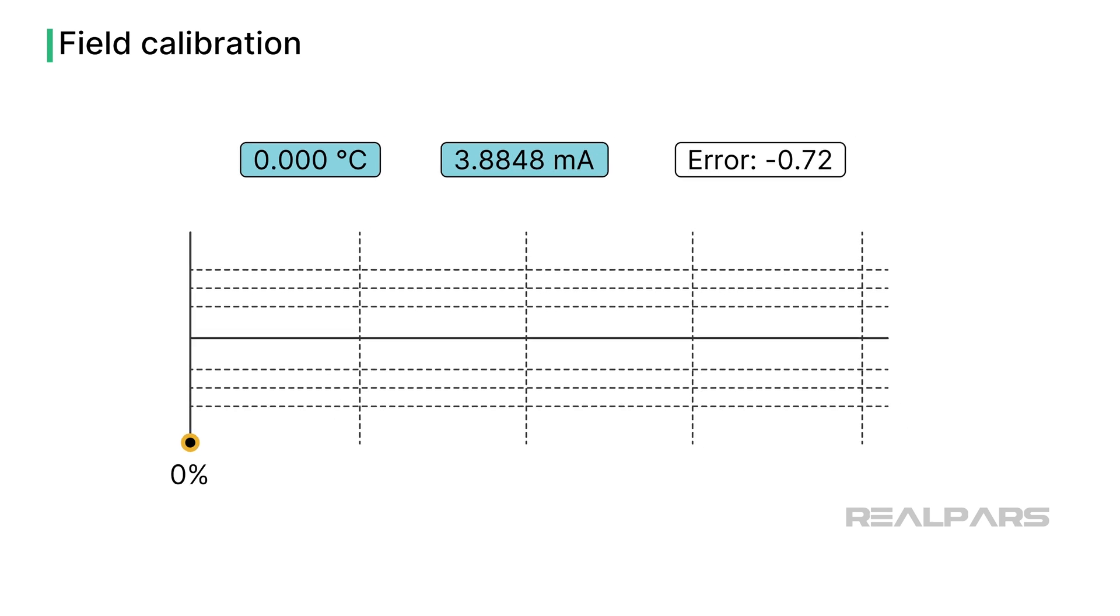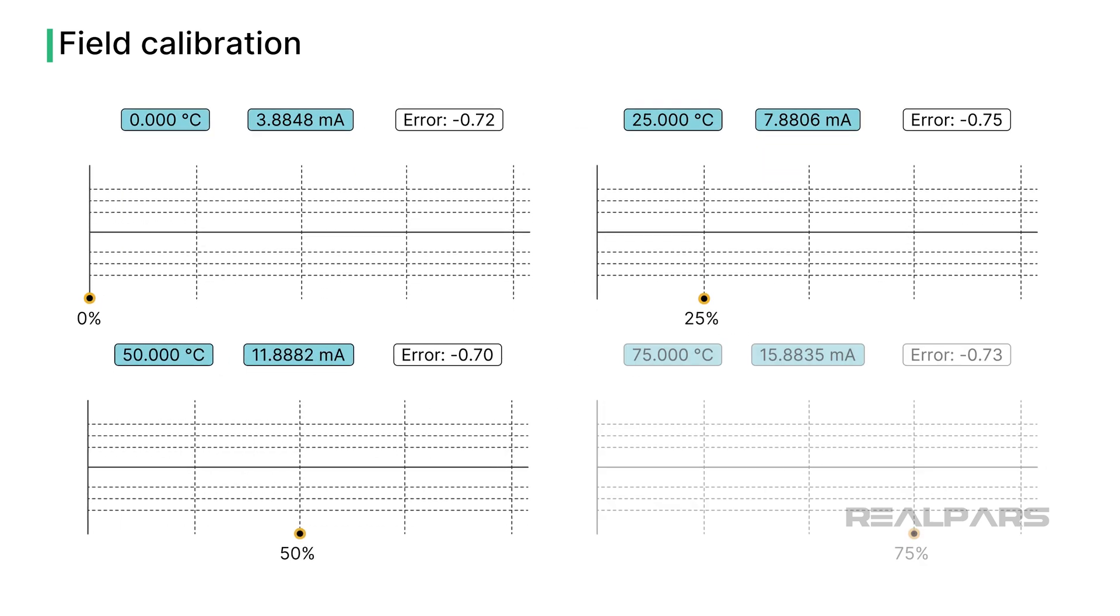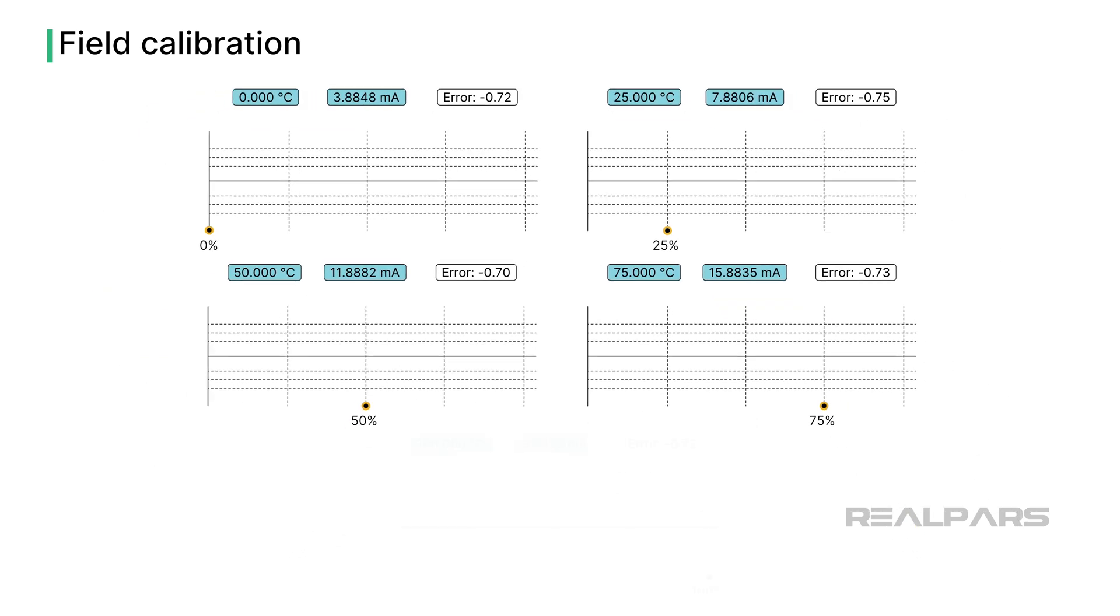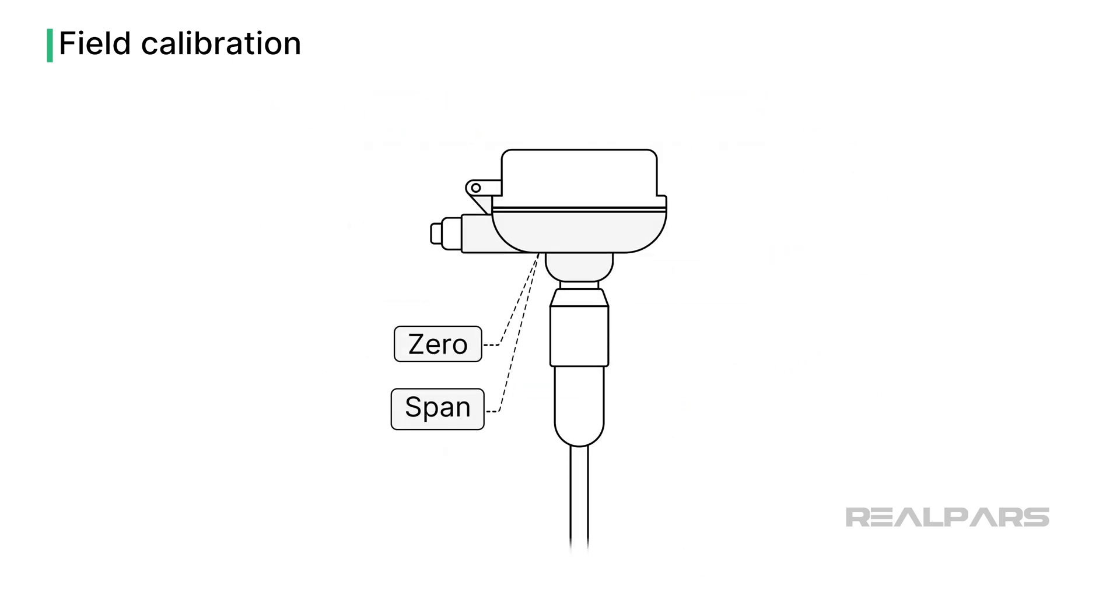If the results are within the specified accuracy and tolerance, then all is good and no adjustments are required. But if there are errors, adjustments to the transmitter zero and span are completed.